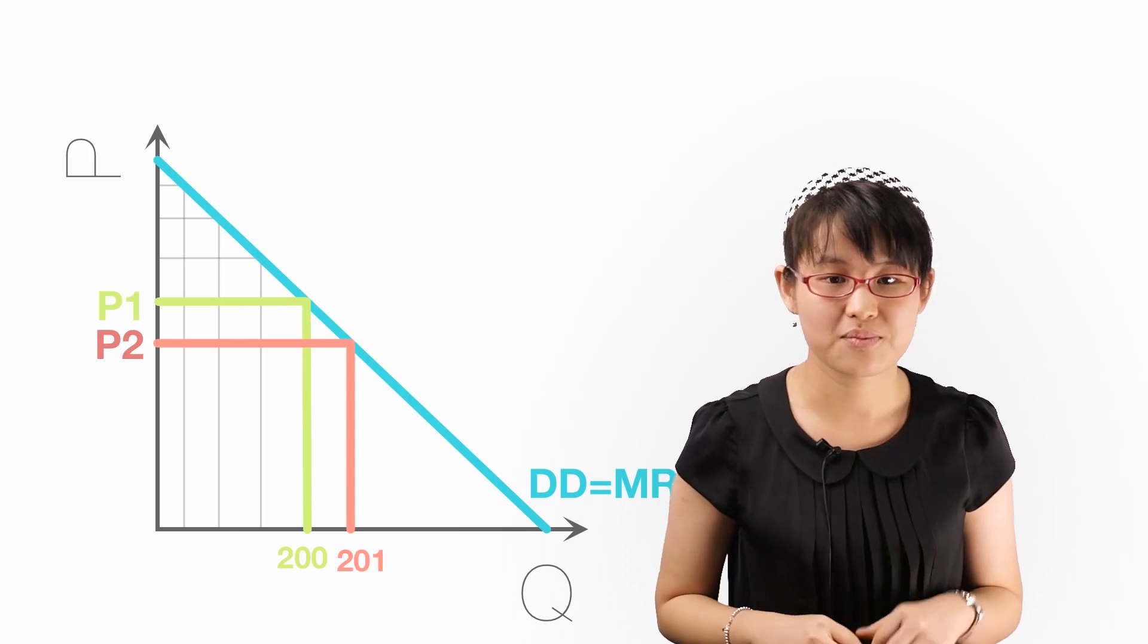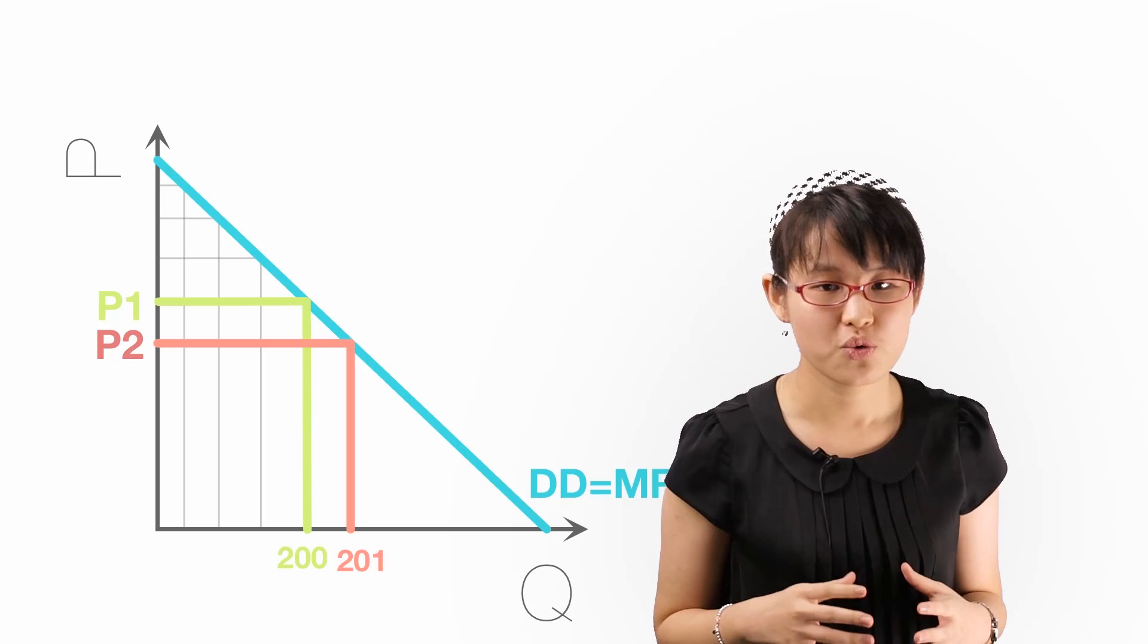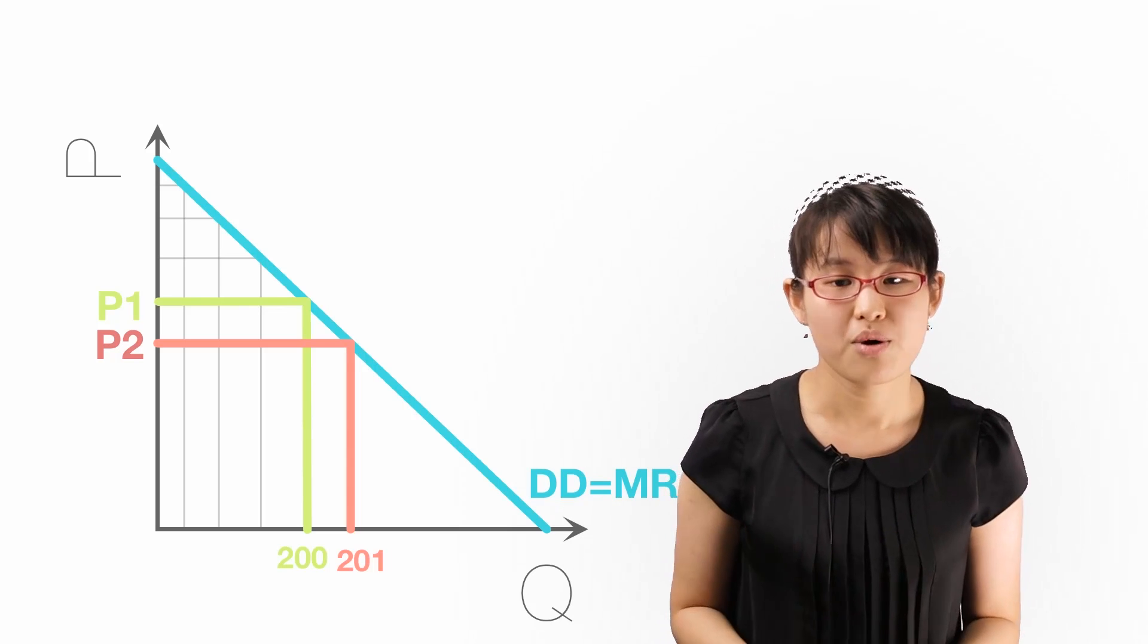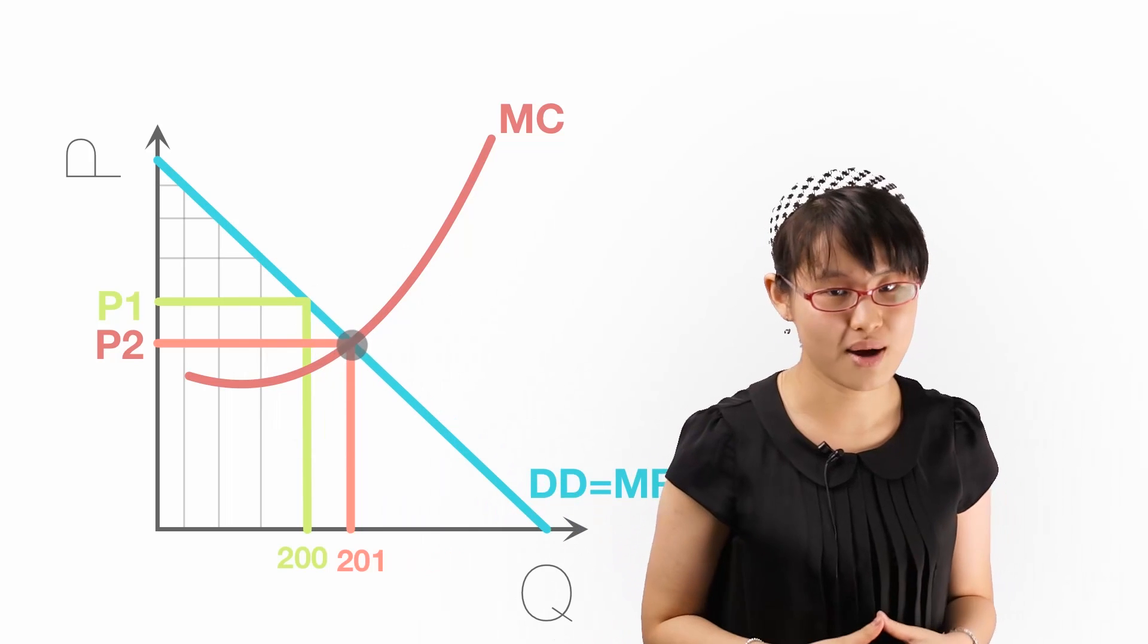So the extra revenue gained from the last unit, the marginal revenue, will be the price of that unit. Profit is maximized at Q1 where MC equals MR.